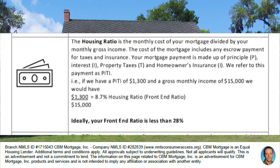The next ratio is the housing ratio. This is the monthly cost of your mortgage divided by your monthly gross income. The cost of the mortgage includes any escrow payment for taxes and insurance. Your mortgage payment is made up of principal, interest, property taxes, and homeowners insurance — we refer to this payment as PITI, which you can see explained in another video.